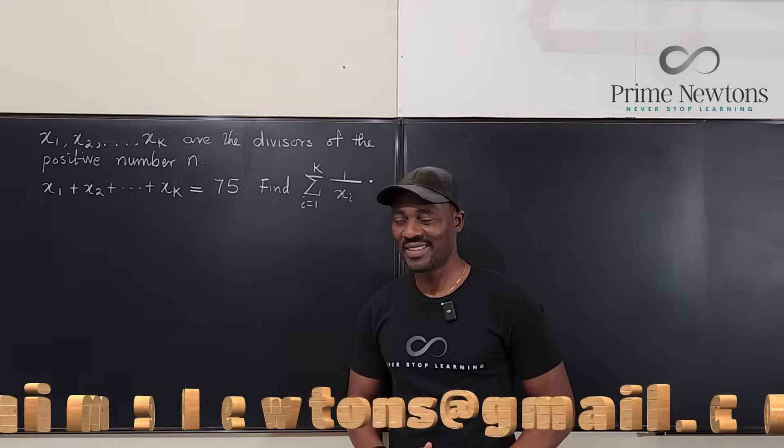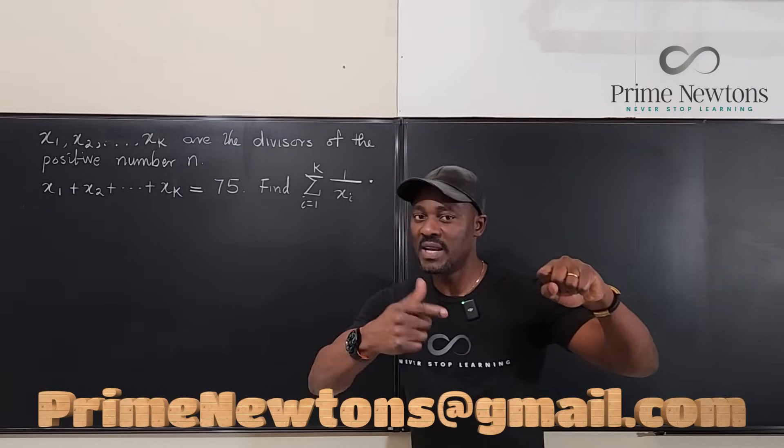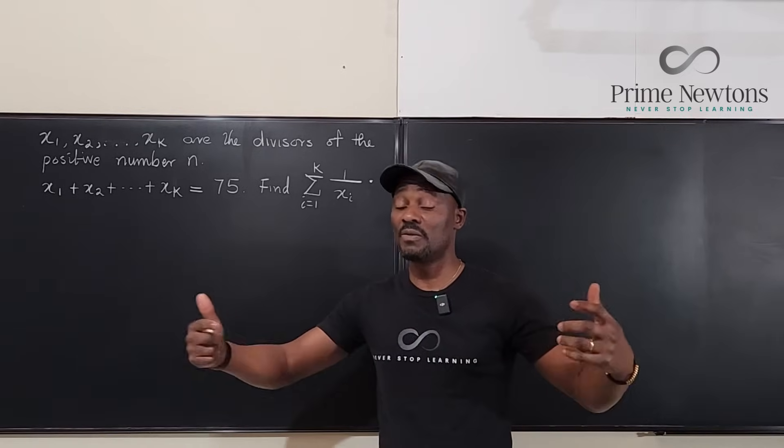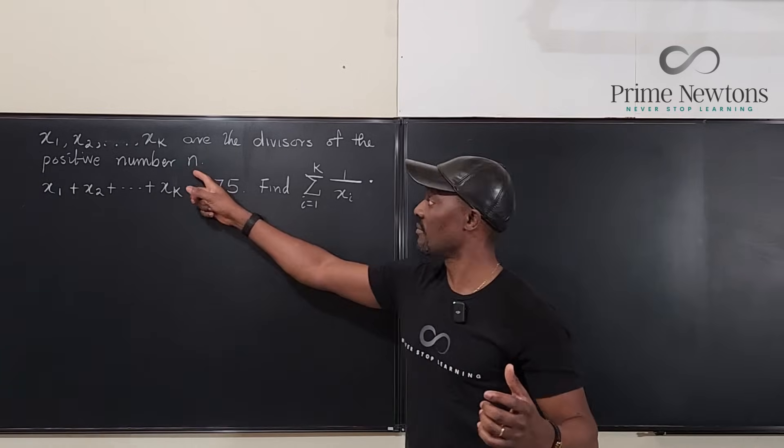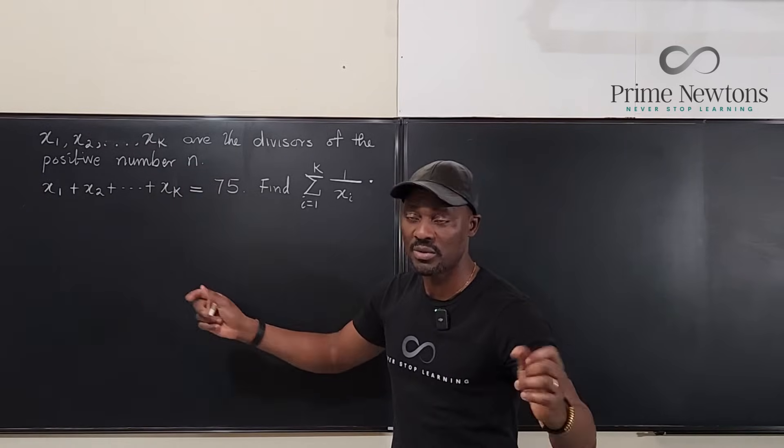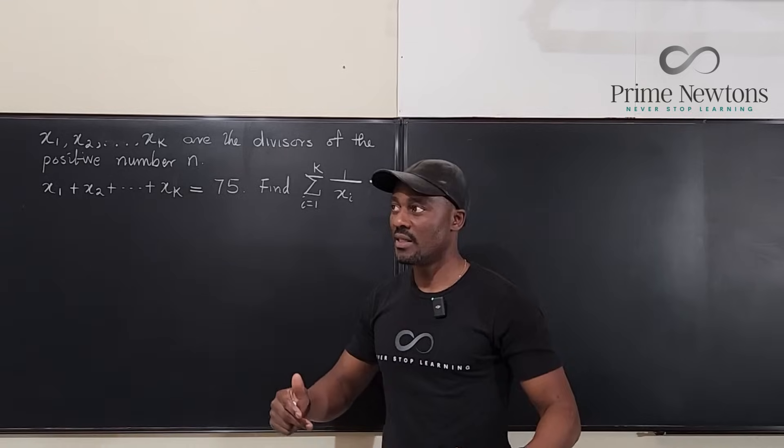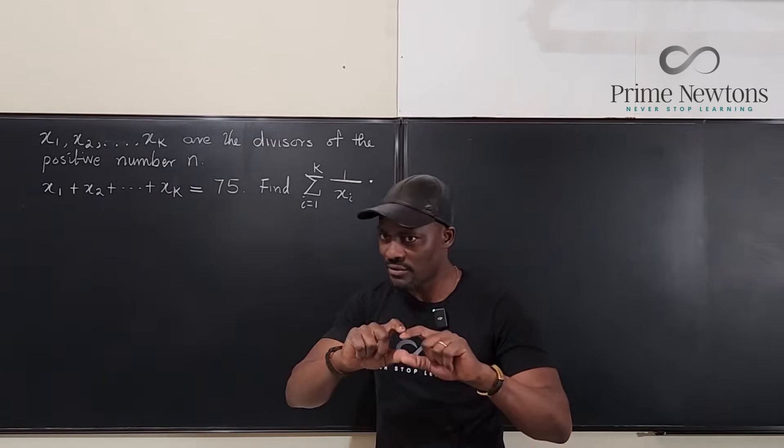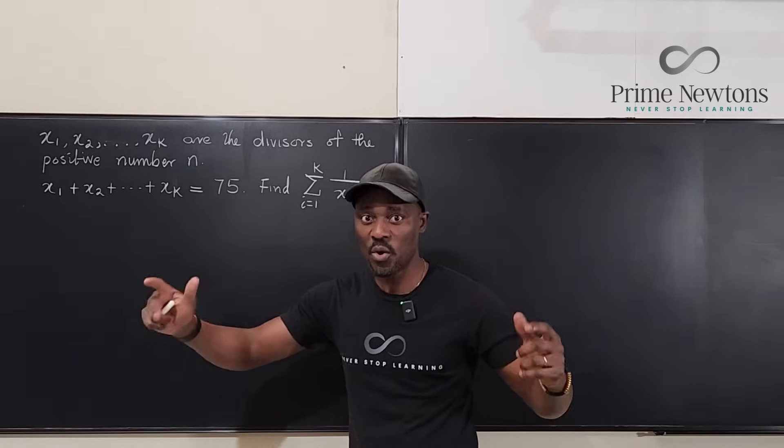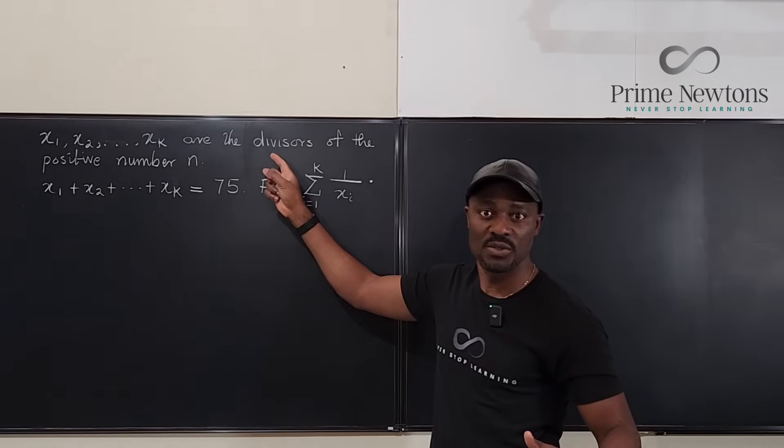Welcome to another video. Suppose we take a number and we list out all the divisors of the number, that is every number that divides the number n. Well, n is a positive number. The first number you're going to write is 1 and the last number that divides n is n itself. And then you have some other numbers in the middle that all divide n. That's what this list refers to.